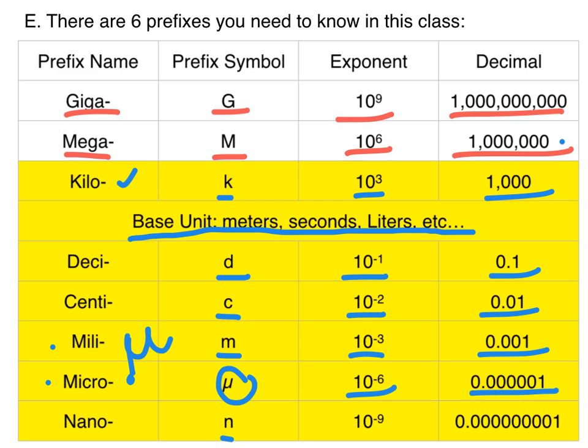And then obviously we have nano. That is N. And that is 10 to the negative nine. And that is a billionth of something. And so that's when we're dealing with things like atoms.